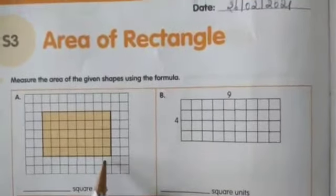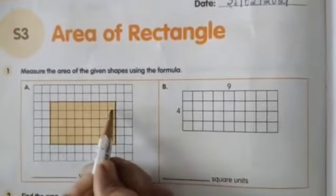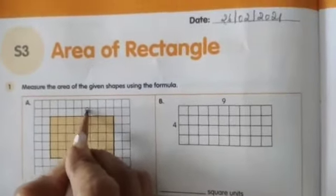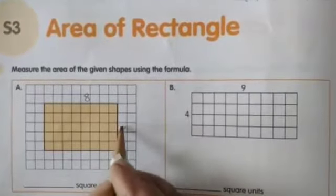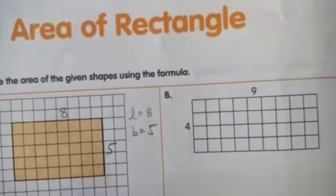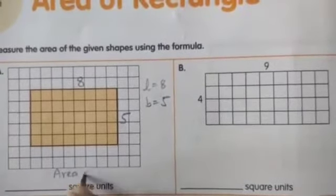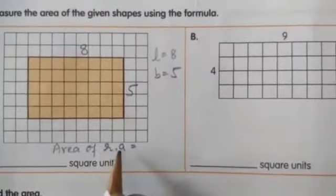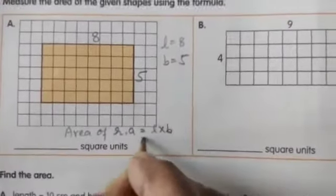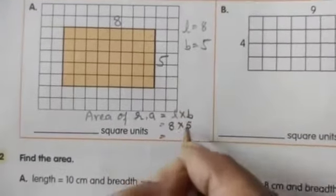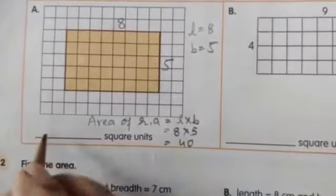You have to find the shaded part children. Count the boxes. Length is 8 and breadth is 5. The formula: area of rectangle equals length into breadth. So area equals 8 into 5, which is 40 square units.